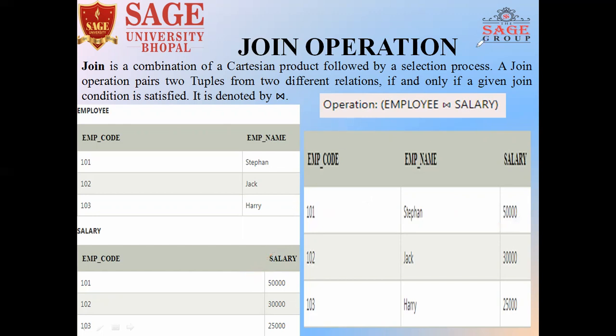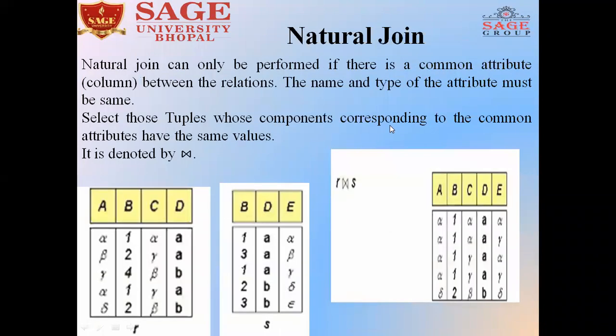Now we are going to discuss about natural join. Natural join is a kind of join in which the name and type of the common attribute should be the same. The selection will be done by the tuples whose components corresponding to the common attribute have the same values.